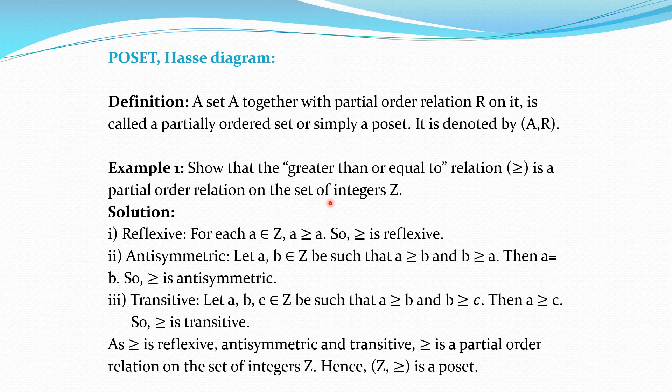That means Z together with ≥ is a poset. To show it is a partial order relation, we show it is reflexive, antisymmetric and transitive. For reflexivity, every A in Z must be related to itself. For every A in Z, A ≥ A, so the relation is reflexive.